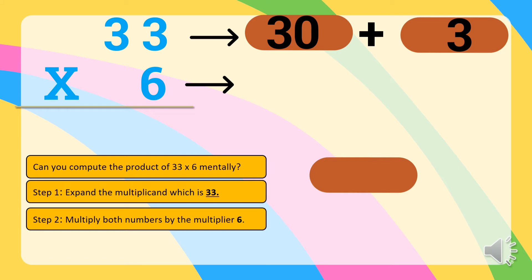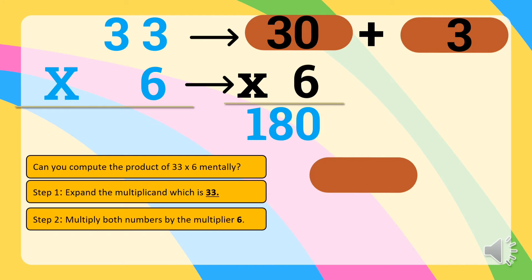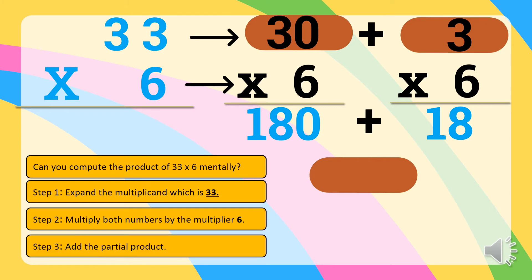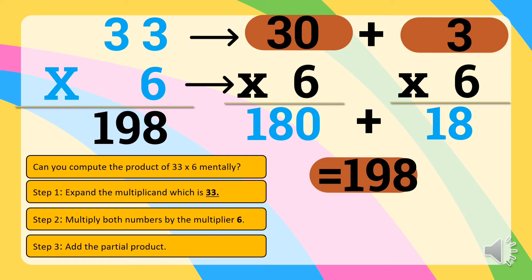Multiply both numbers by the multiplier 6. So 30 times 6 is equal to 180. Then, 3 times 6 is equal to 18. Therefore, our partial products are 180 and 18. Step three is to add the partial products. So let's add 180 plus 18. The answer is 198. Therefore, 33 times 6 is equal to 198.